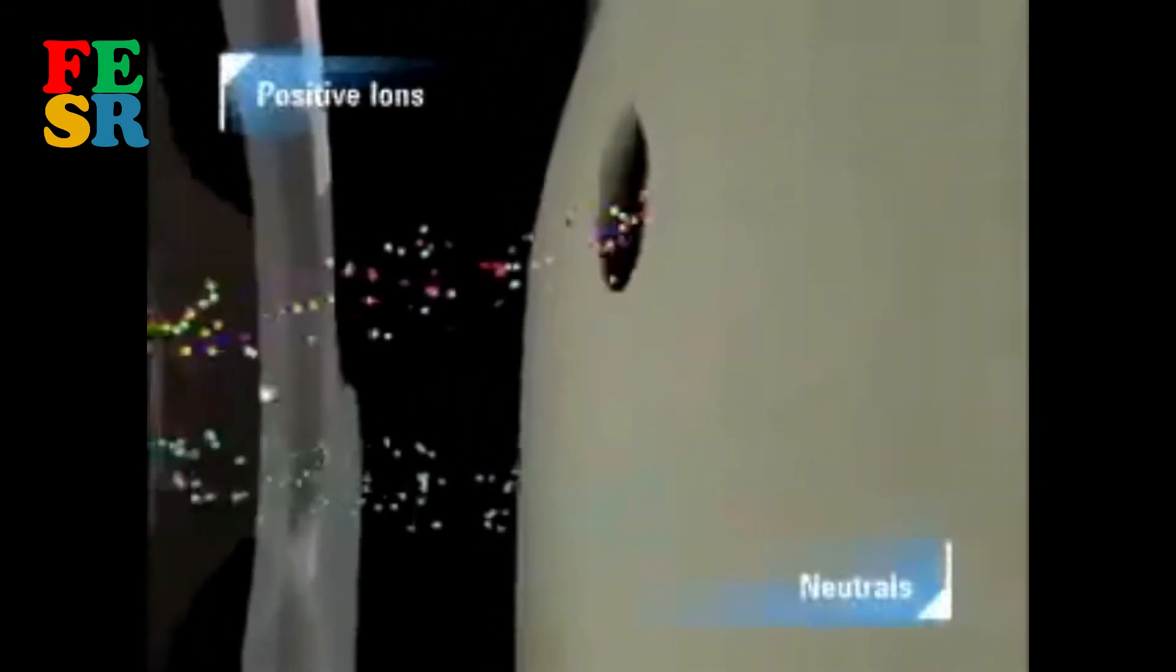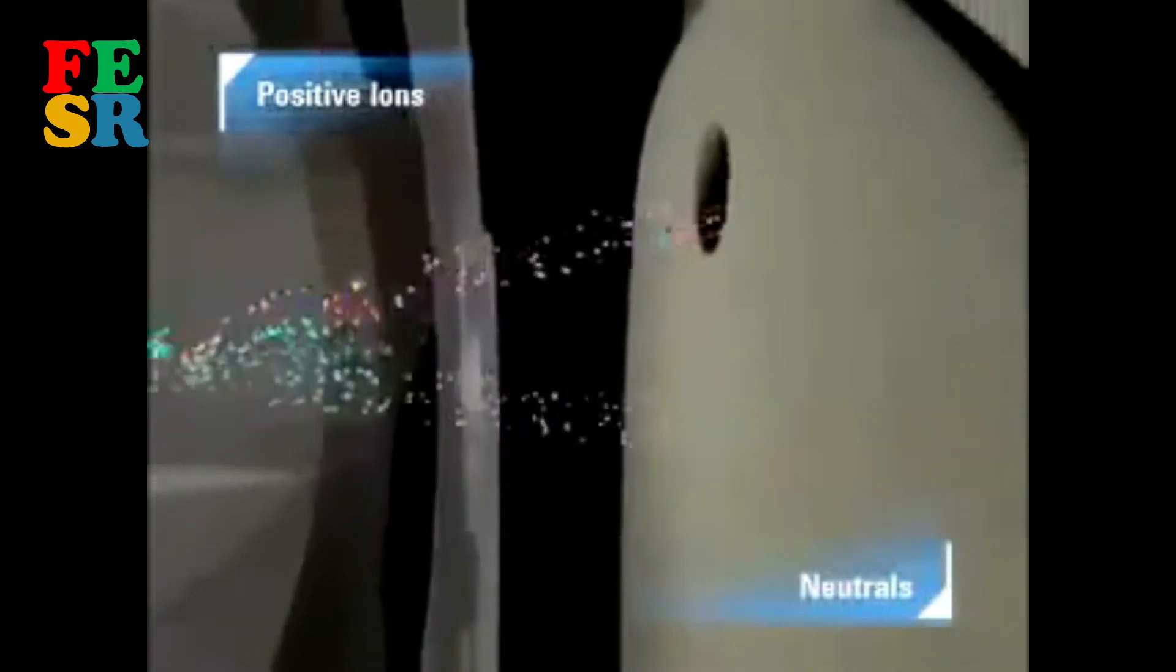Electrostatic lenses focus the ion beam and separate the positive ions from the unwanted neutral species by bending them into the reaction cell, the heart of the octopole reaction system, or ORS.